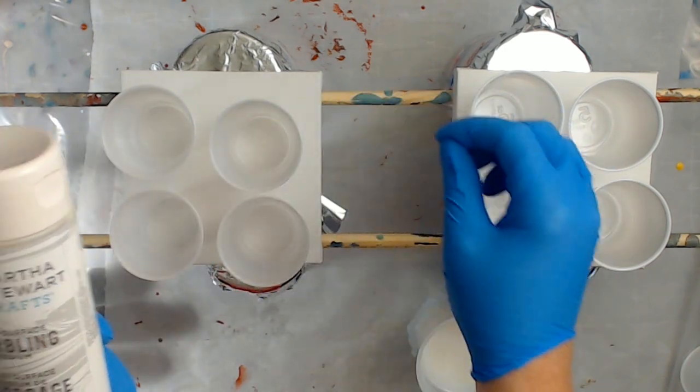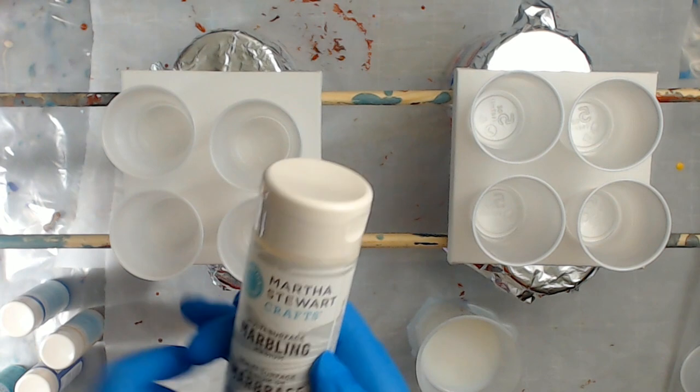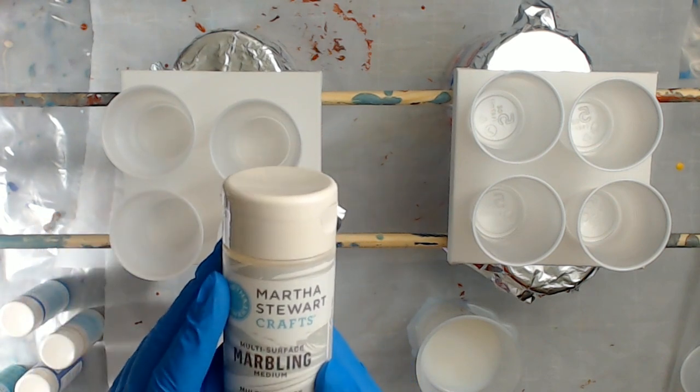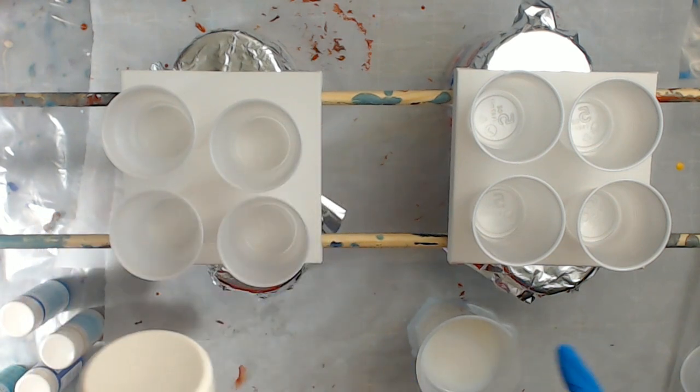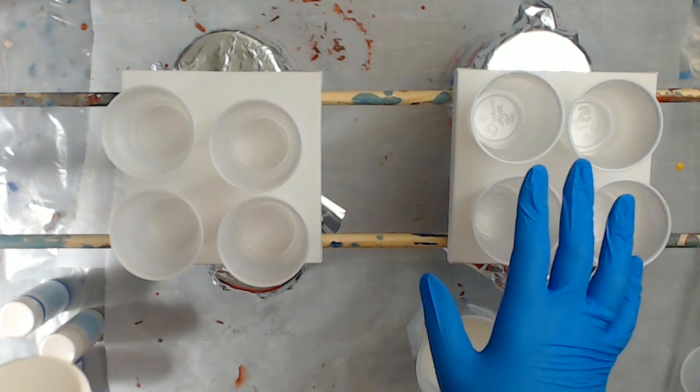In the video they just kind of dribble the color onto the canvas. We're actually going to do a dirty pour and I'm going to also do a second one using Liquitex pouring medium.